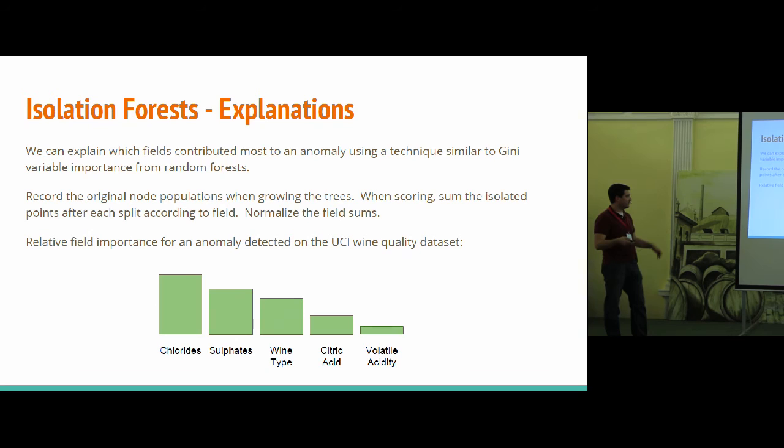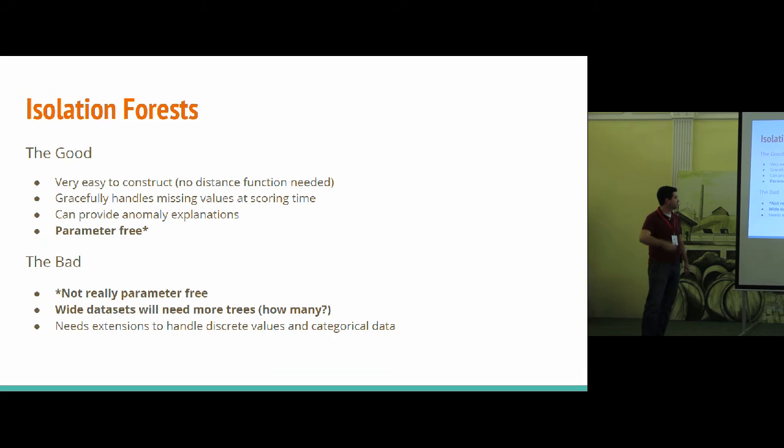The other thing is you can actually do explanations of anomalies. And we can do that by kind of stealing the trick used with random decision forests, originally called Gini variable importance, where every time there's a split in a tree, you kind of measure the improvement you're making and you credit the field that was used for doing that split. For isolation trees, that improvement is really how many points are being separated away whenever that split happens. And once you do that over an entire ensemble, you can get these nice sort of relative distributions, which lets us know what fields led to this being anomalous.